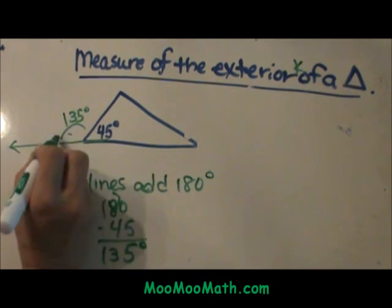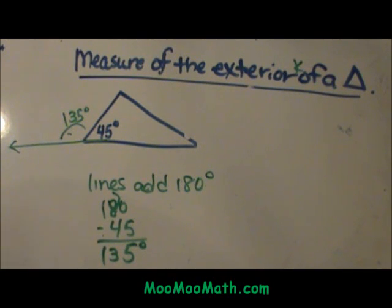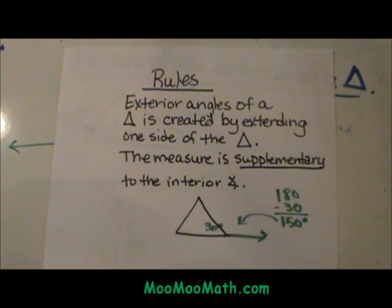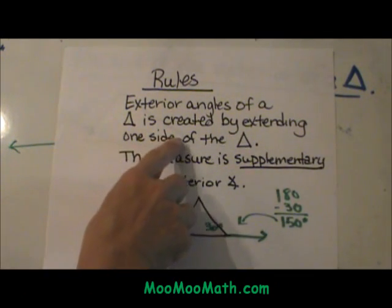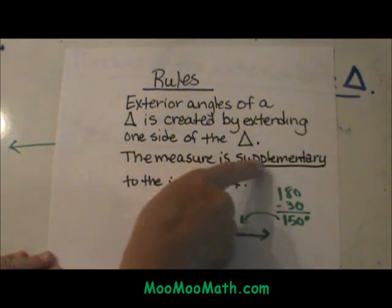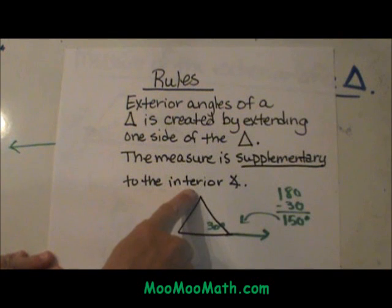So this one is 135 degrees. Let's look at the rules on finding exterior angles in a triangle. First you have to create the exterior angle by extending one side of the triangle. Then the measure is supplementary to the interior angle.